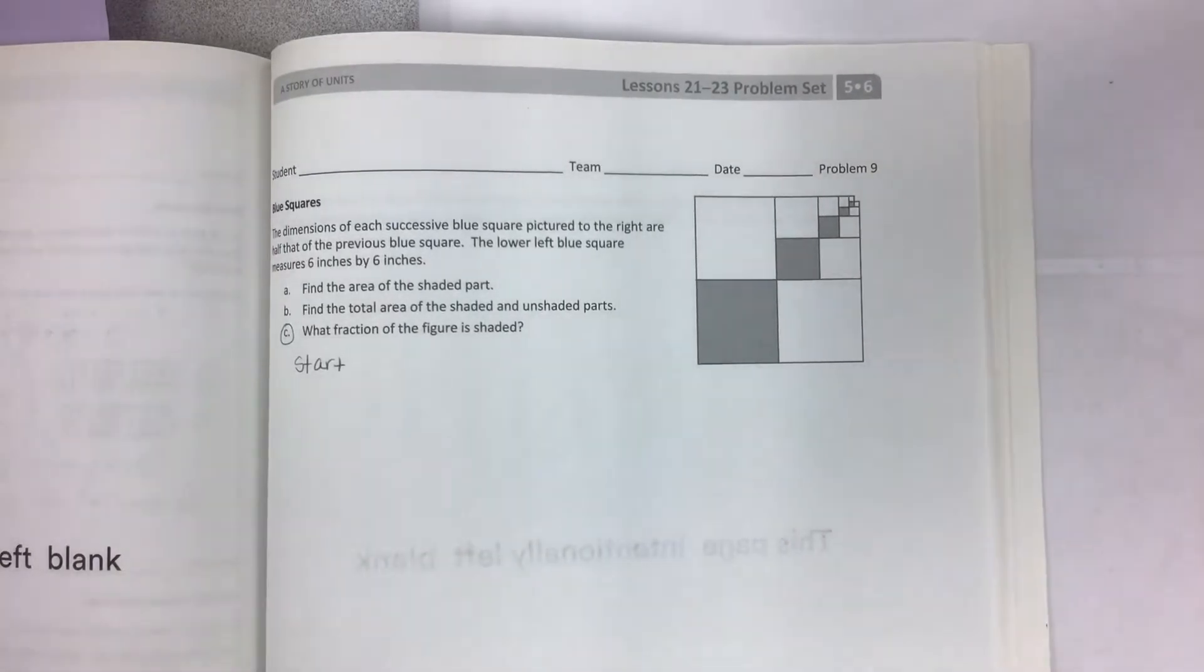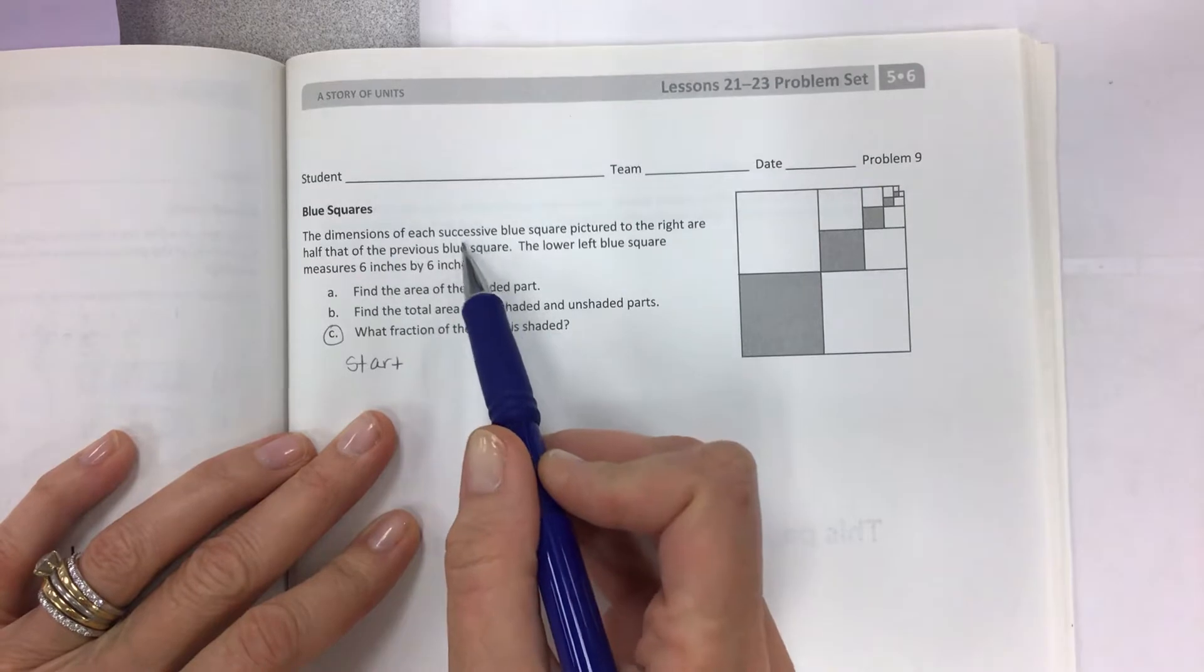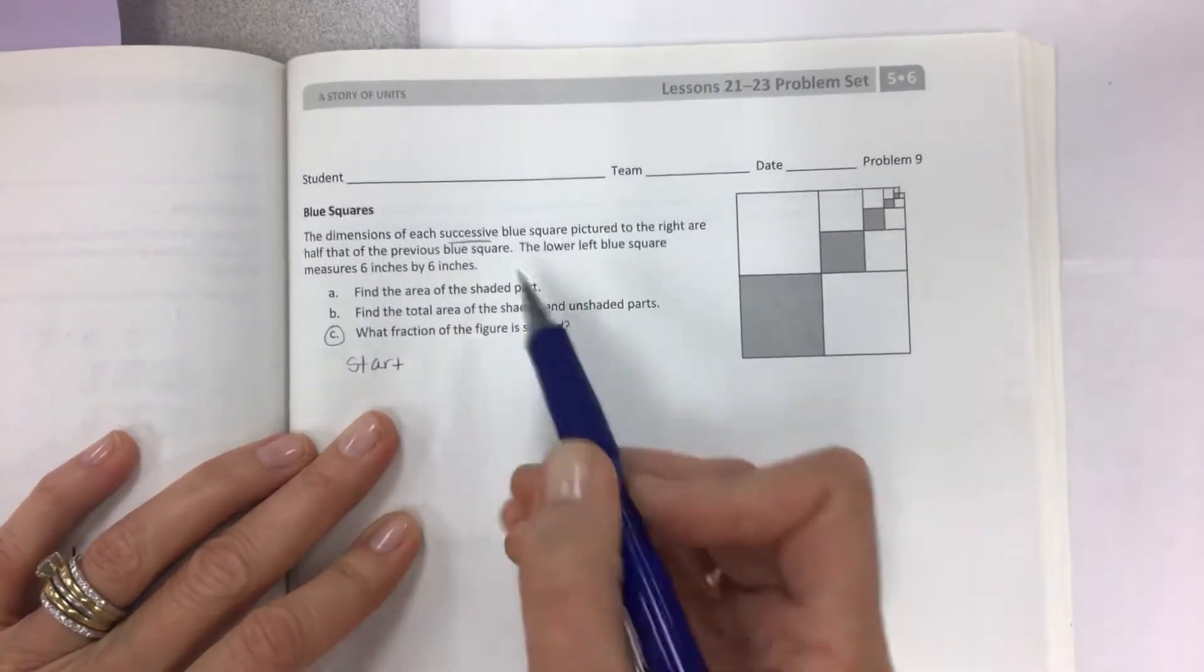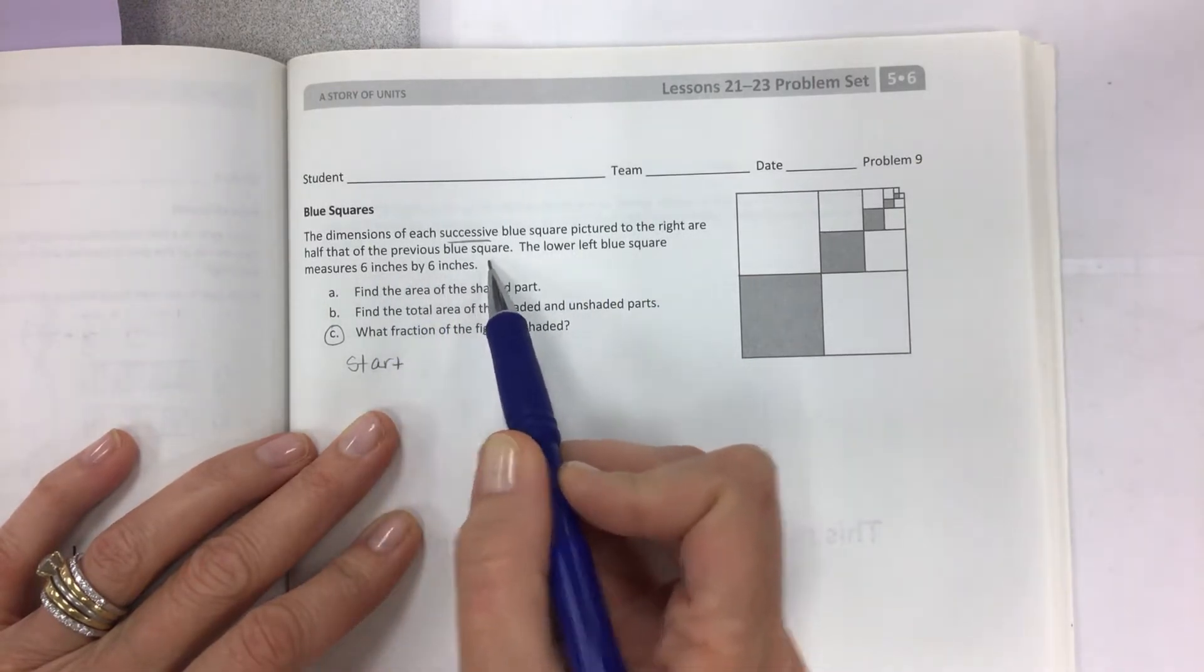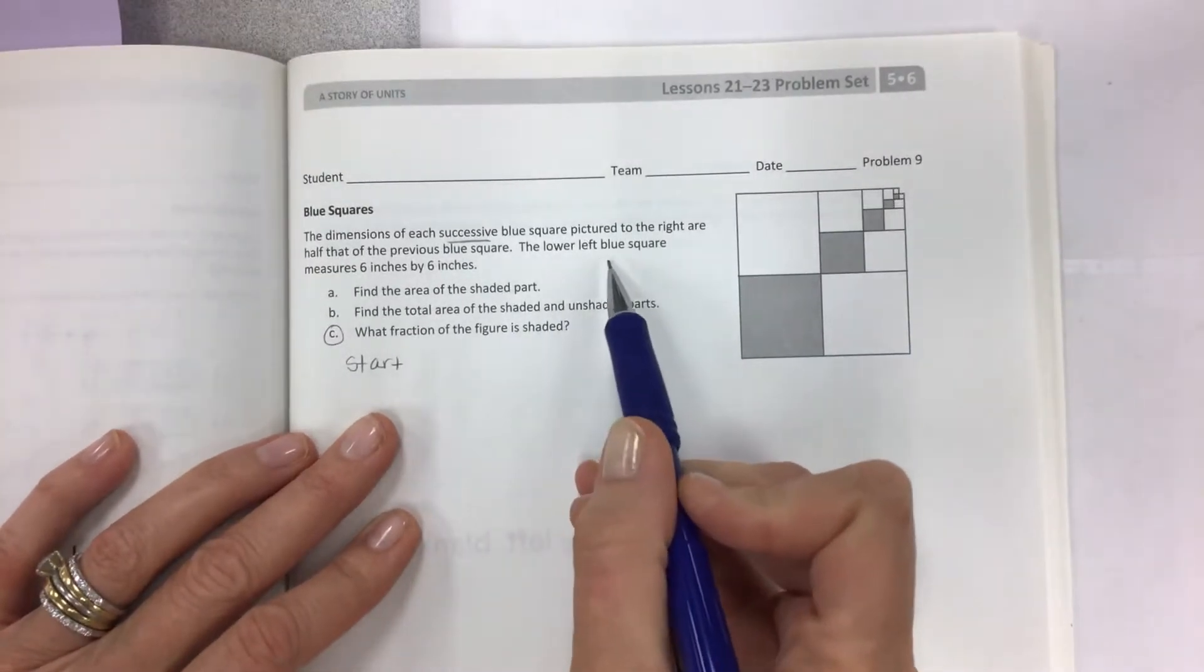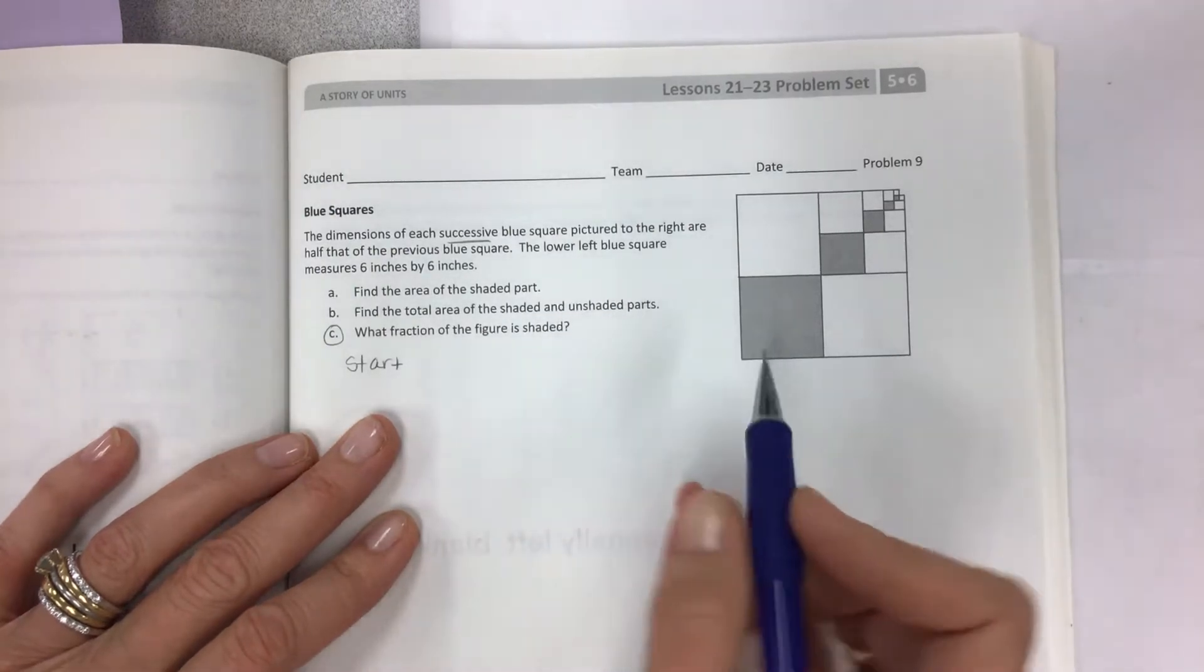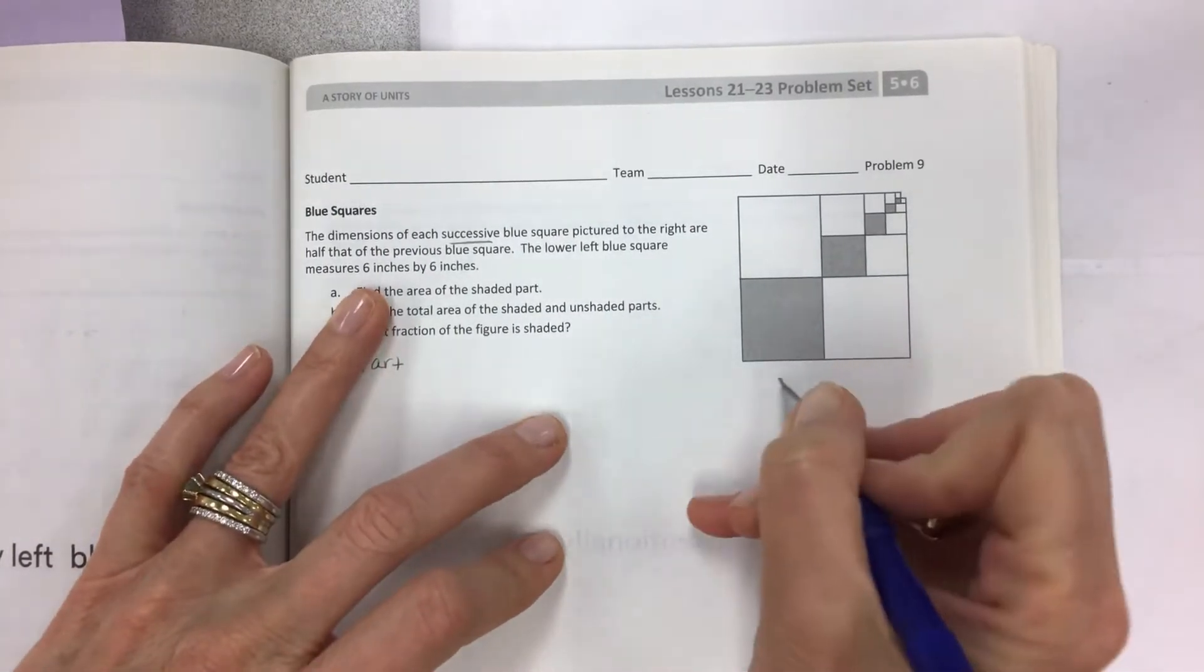The dimensions of each successive, that means like as they go in a row, blue square pictured to the right are half that of the previous blue square. Of course nothing's in color so we would never know. The lower left blue square measures six inches by six inches, so we're gonna take the grayed out shaded area and we're gonna label what we know, which is the six inches by six inches.